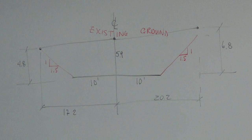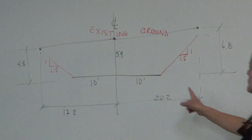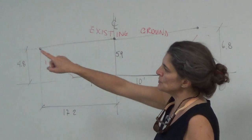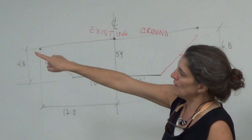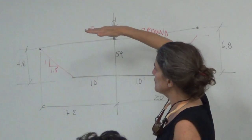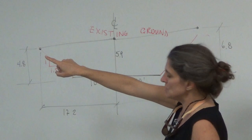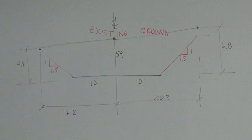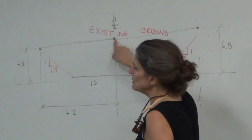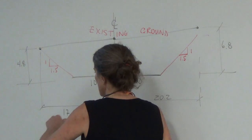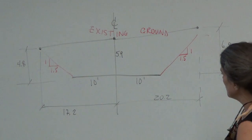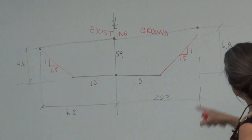First thing I did is I drew the road bed and it said that it was 20 feet wide. So I drew my center line and I knew it was 10 feet to the left, 10 feet to the right. I chose the middle point, which is the C5 point. The middle point, since there's no denominator, what is it implying that the denominator is? Zero — which means it's on the center line. There's no X value, so it's 5.9 up.